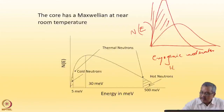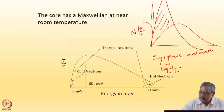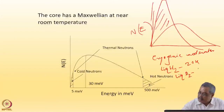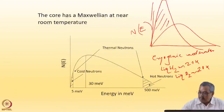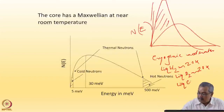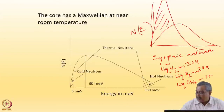The typical cryogenic moderators are liquid hydrogen at 20 Kelvin, liquid deuterium at around the same temperature of 20 Kelvin, and at the Rutherford Appleton Laboratory you also have liquid methane at around 100 Kelvin.